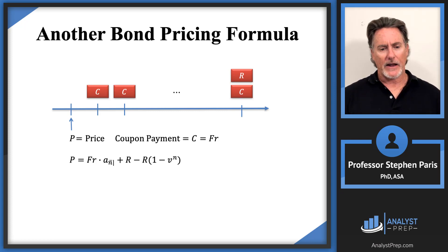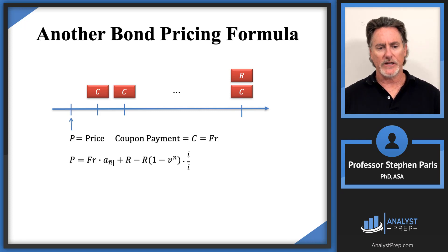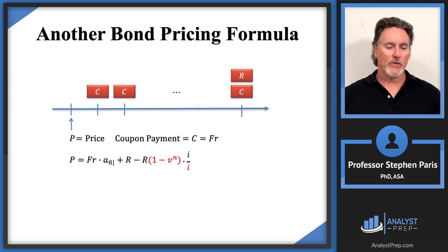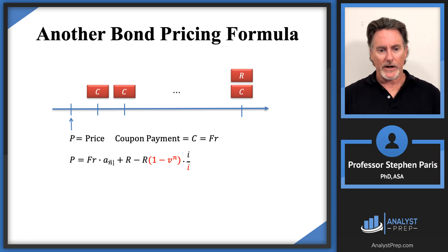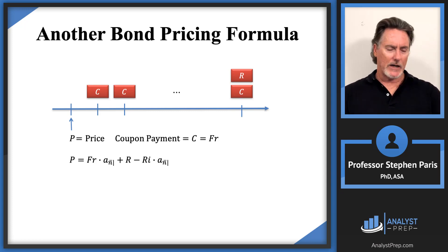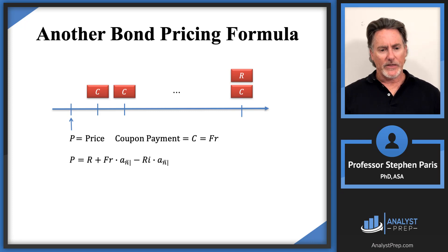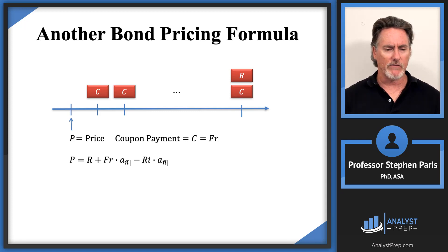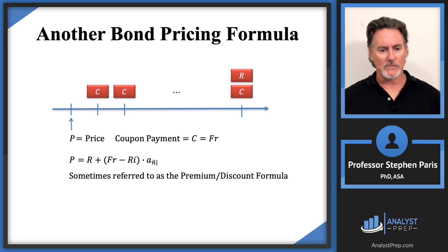Next, multiply that last term by i/i (equals 1, so no change). This lets me group (1 − v^n)/i, which is the closed-form formula for the annuity a-angle-n. So that last term becomes C × i × a-angle-n. Then I interchange the first two terms so both remaining terms share an a-angle-n factor, which I factor out. The result is: P = C + (F × r − C × i) × a-angle-n. This is the premium/discount formula.